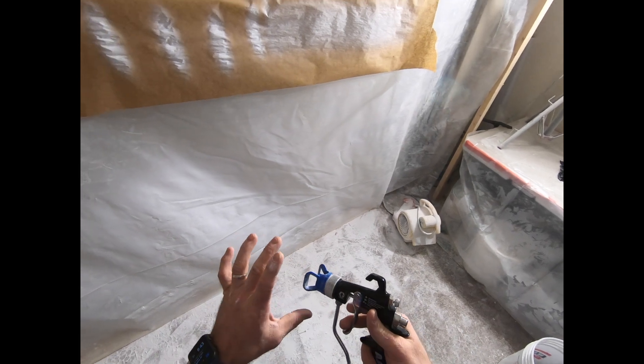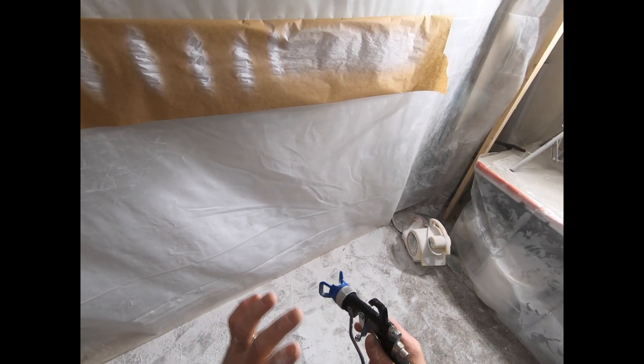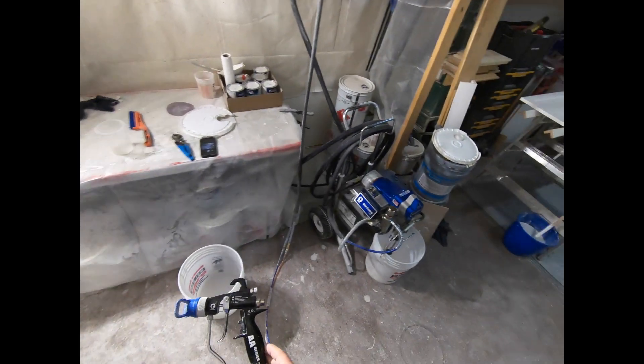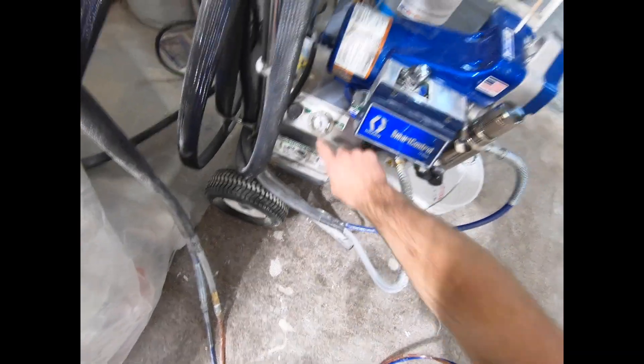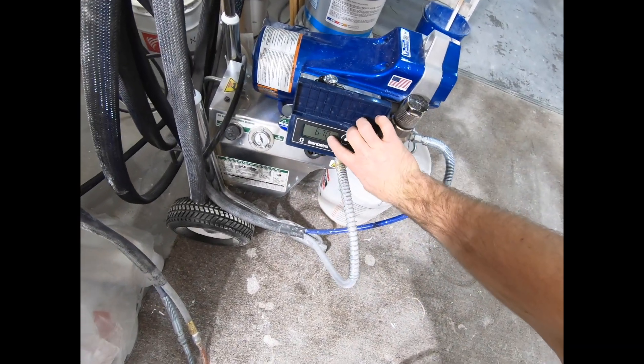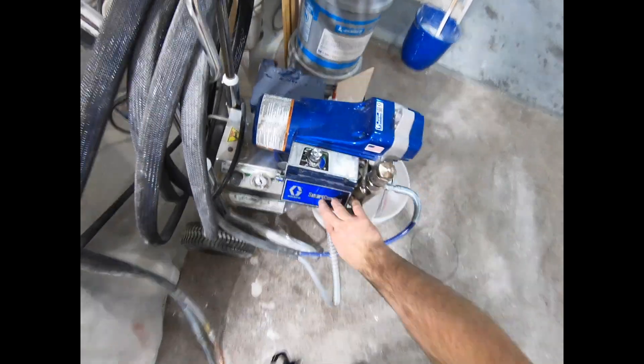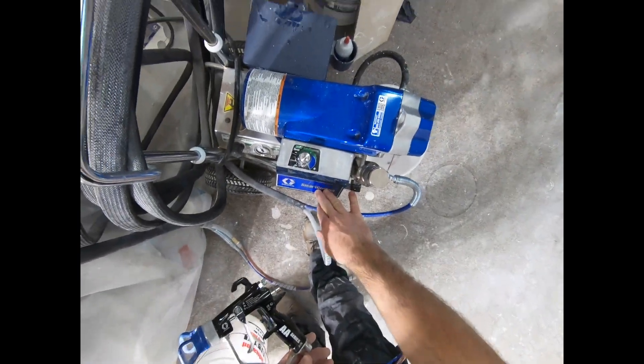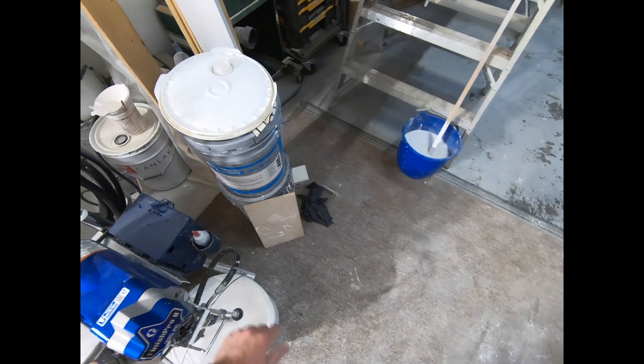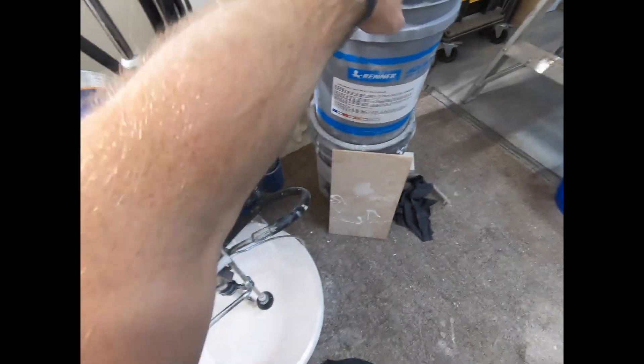You want to have that fine line between really low material but atomized correctly. Right now I have it set at just under 20, 660, 670 PSI, which is right there. And I'm spraying Renner, a water-based self-sealer.